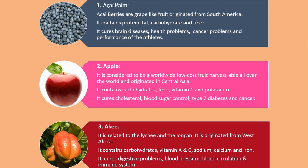Number 2. Apple. It is considered to be a worldwide popular fruit harvestable all over the world and originated in Central Asia. It contains carbohydrates, fiber, vitamin C and potassium. It cures cholesterol, blood sugar control, type 2 diabetes and cancer.